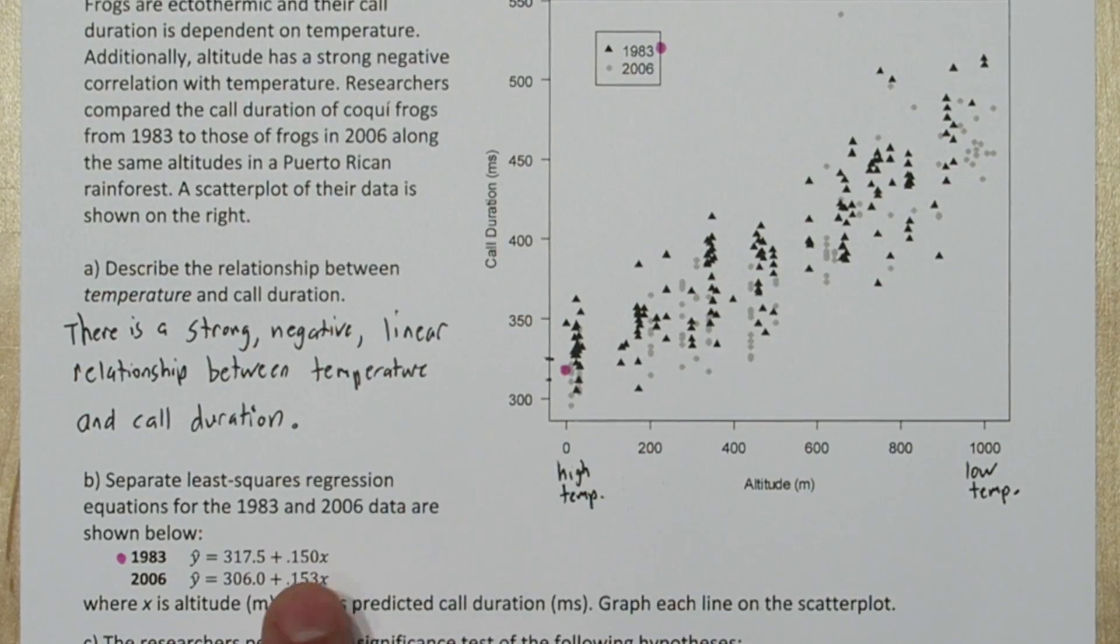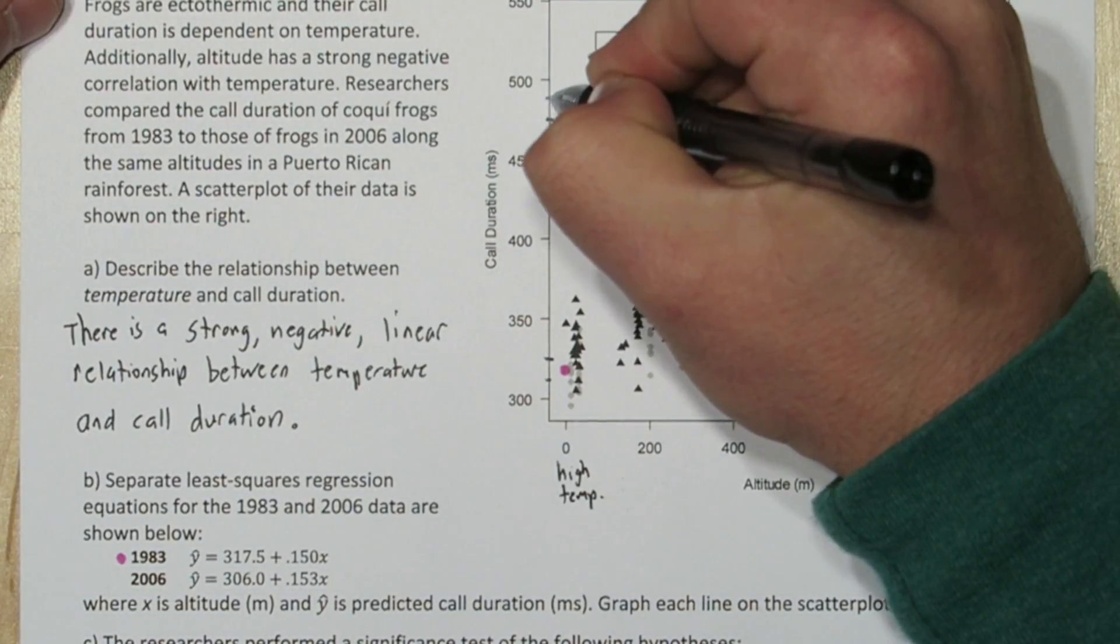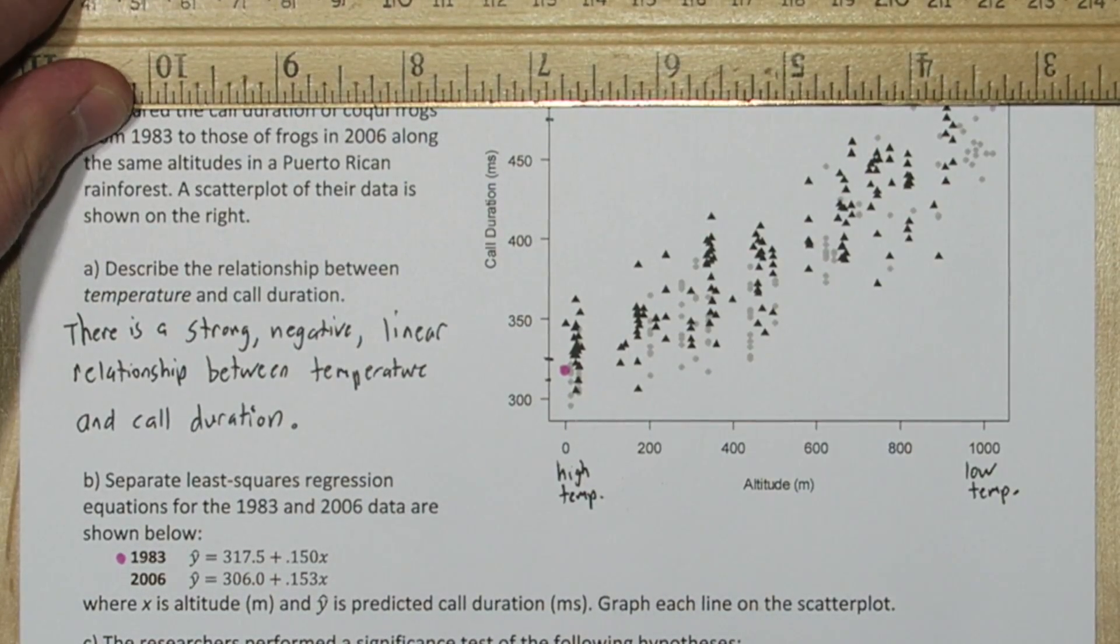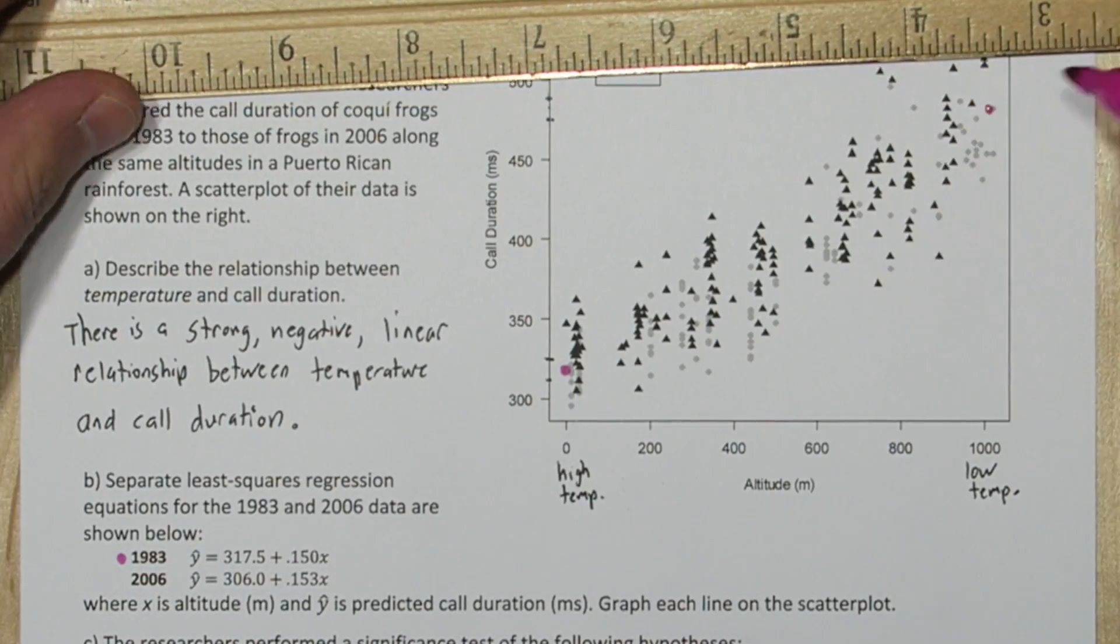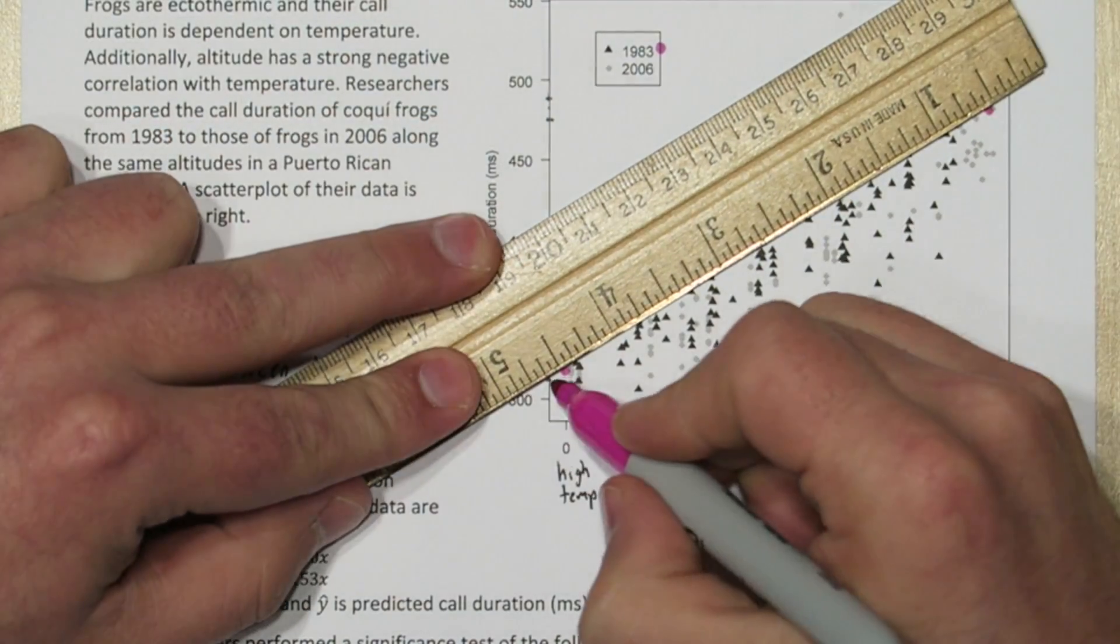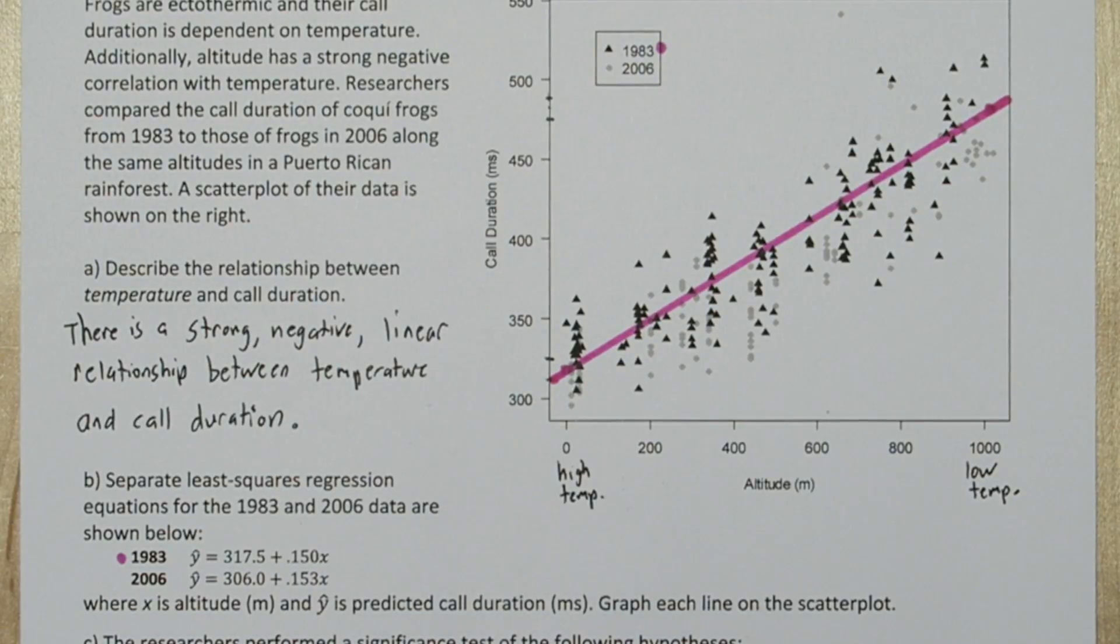So 1000 times the slope is 150, and when we add 317.5, we get 467.5. That's about right there. So our least squares regression line for 1983 looks like that.